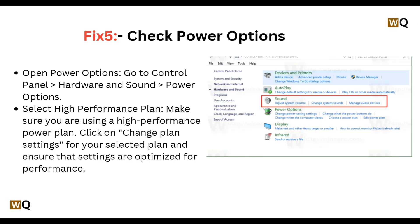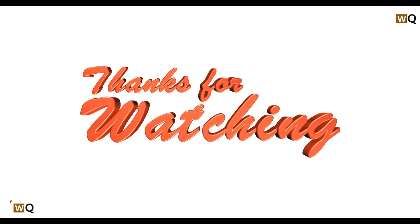Fix 5: Check power options. Open Power Options via Control Panel, then Hardware and Sound, then Power Options. Select the High Performance plan to ensure your system is optimized for performance. Click on Change Plan Settings for your selected plan and confirm settings are optimized for performance.